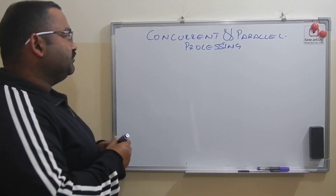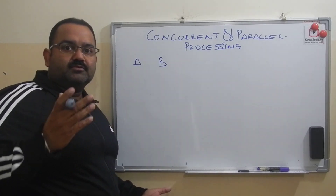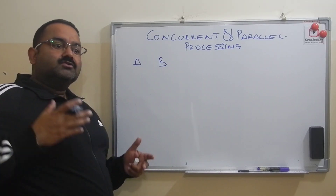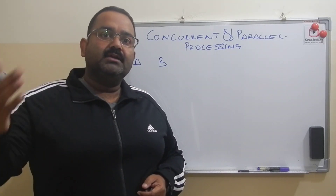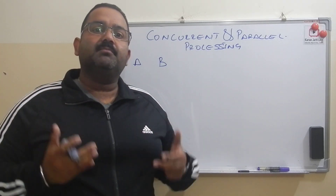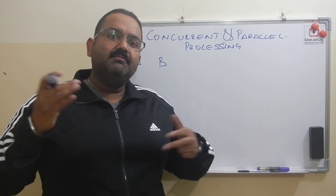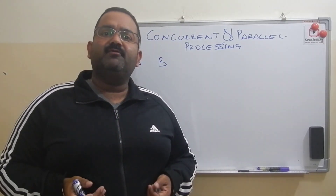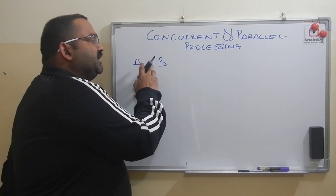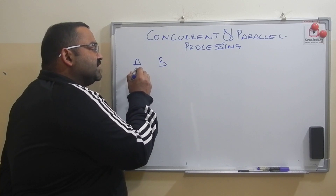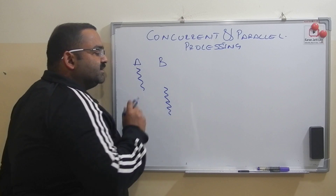For example, we have a program A and a program B, or a process A and process B. As a user we write a program, the operating system divides the program into processes — that is transparent to us. Each process can be divided further into very small lightweight processes, which we call threads. Suppose we have two processes A and B; those processes can be divided into small lightweight processes we call them as threads.